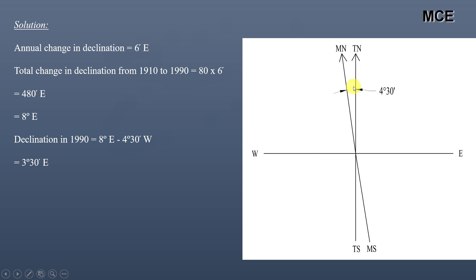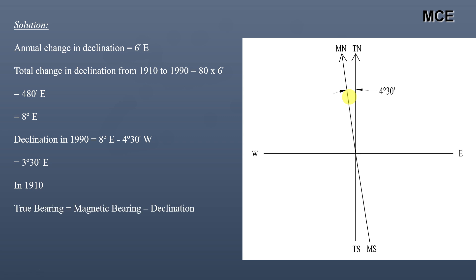Declination is the horizontal angle which the magnetic meridian makes with the true meridian — either eastward or westward. In 1910, the declination was 4°30' westward, so magnetic north is on the west side of true north, and the angle between true north and magnetic north is 4°30'.